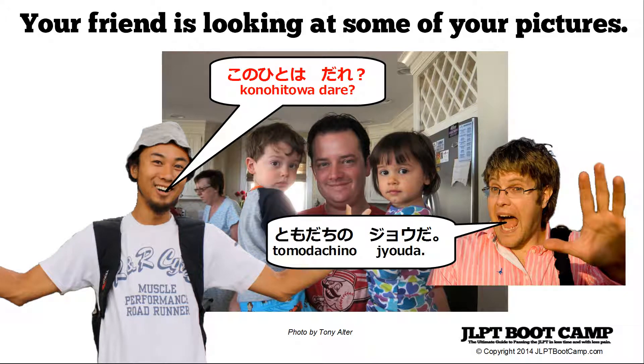This is Mac from jlptbootcamp.com here with another N5 grammar lesson. This time we're going to be looking at dare and nani, two question words. Dare is 'who,' nani is 'what.'